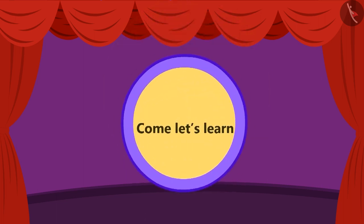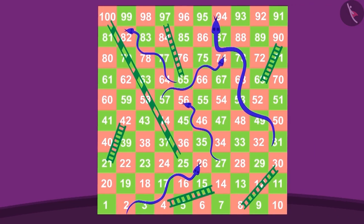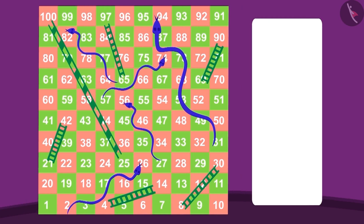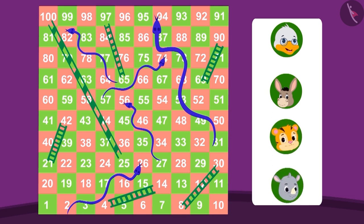Let's learn. Hey look, here the game of snakes and ladders is going on. Here Badbole Badak Uncle, Bola Donkey, Sher Khan and Gugu Hippo are playing.